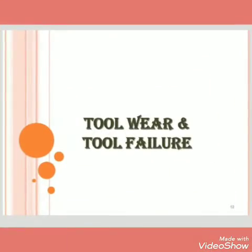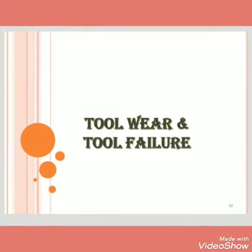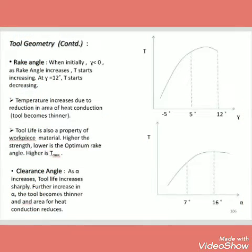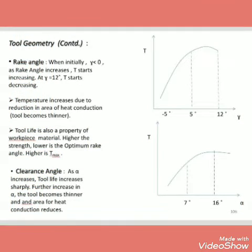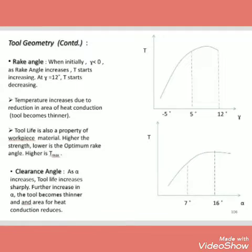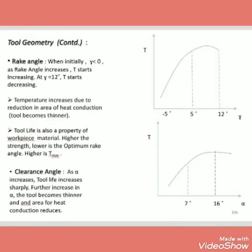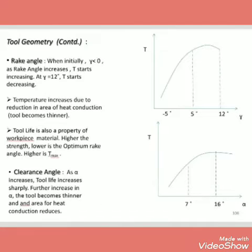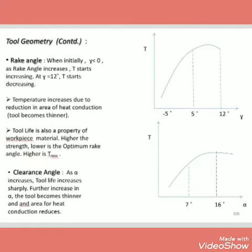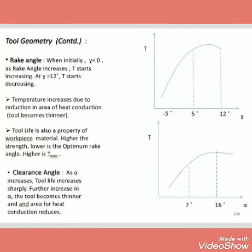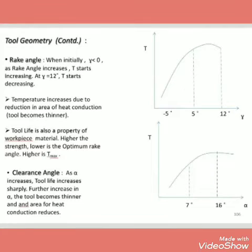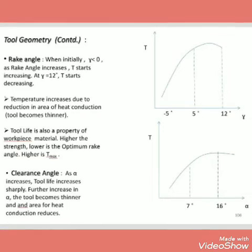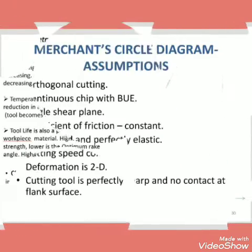Next is tool wear and tool failure. In the tool geometry, initially the rake angle gamma is equal to zero; as the rake angle increases, tool life is also a property of the work piece material — higher the strength, lower the optimum rake. As the clearance angle alpha increases, tool life also increases sharply.